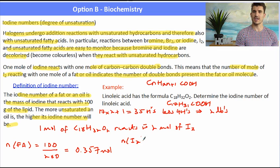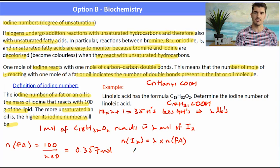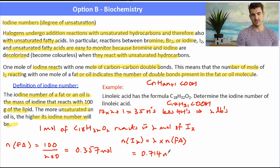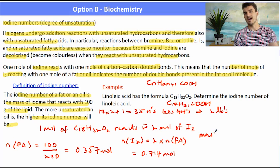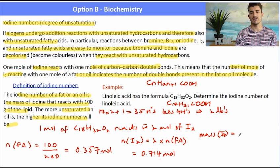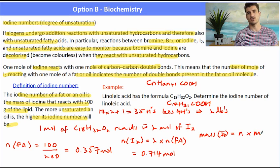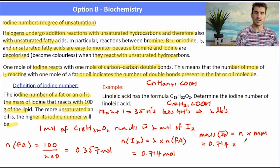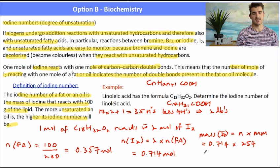Then we can use the ratio to work out the number of moles of iodine. We said that the ratio is two to one. So we need double the amount of I2 to react with all of those double bonds. Once we've determined the number of moles, now we can work out the mass and the mass tells us the iodine number of the fatty acid. So the number of moles times by the molar mass will give us the iodine number of linoleic acid.